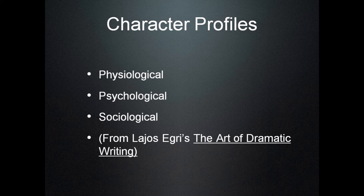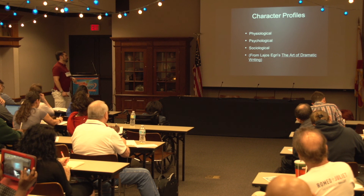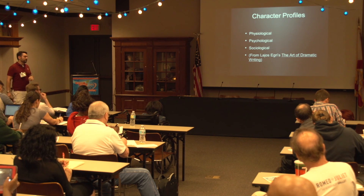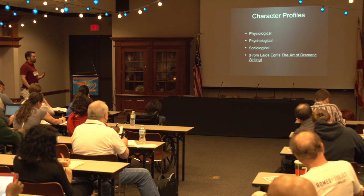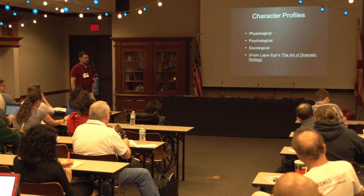When you're writing dialogue, it's important to consider three aspects of your characters: the physiological aspects, the psychological aspects, and the sociological aspects. I'm going to itemize these in greater detail, so if you're taking notes you might want to separate the three. I adapted this from Lajos Egri's The Art of Dramatic Writing, which is specifically about playwriting but really applies to everything. It was written in the 40s, so many of the references tend to be from older plays.